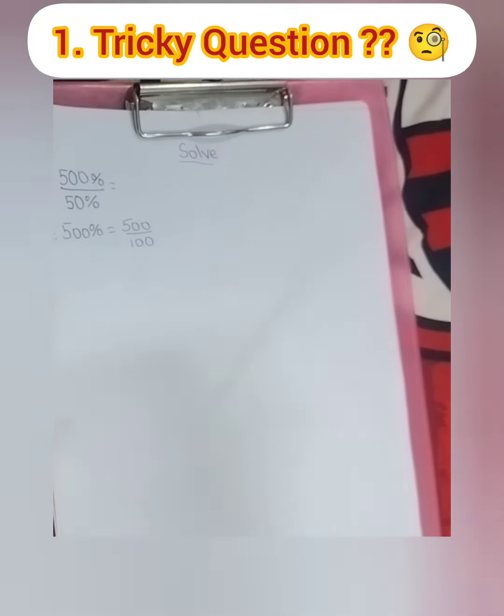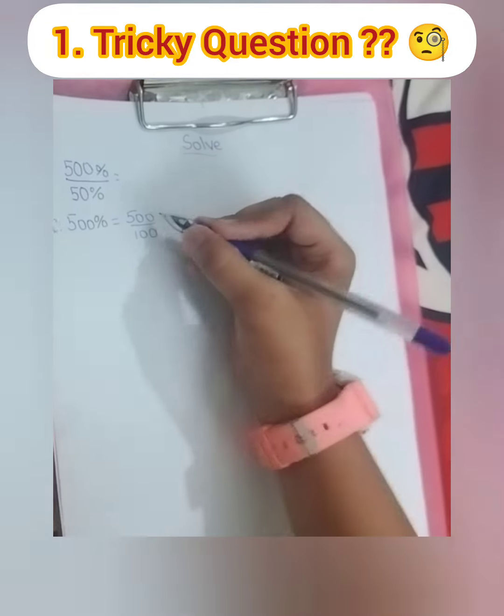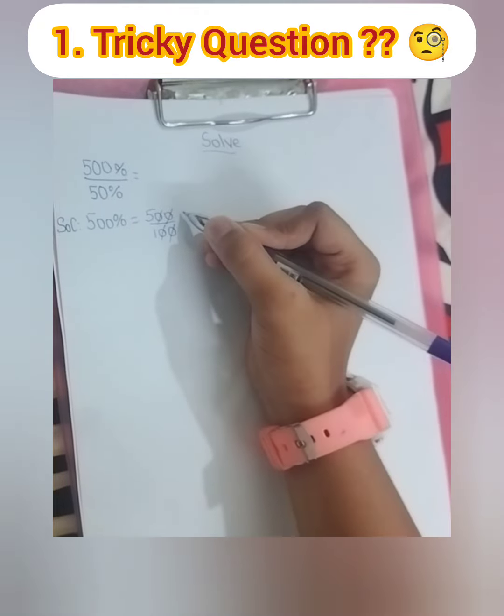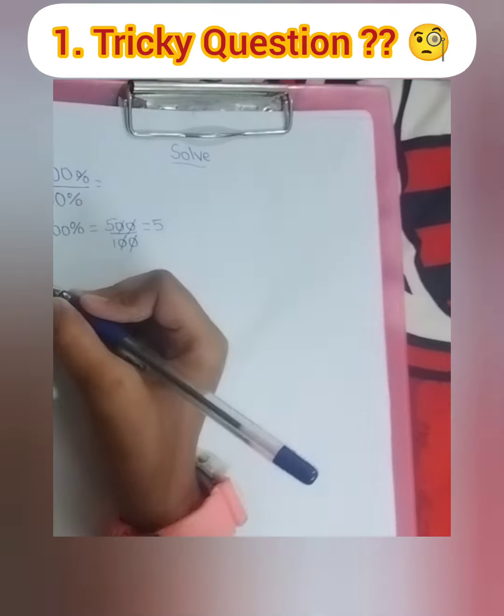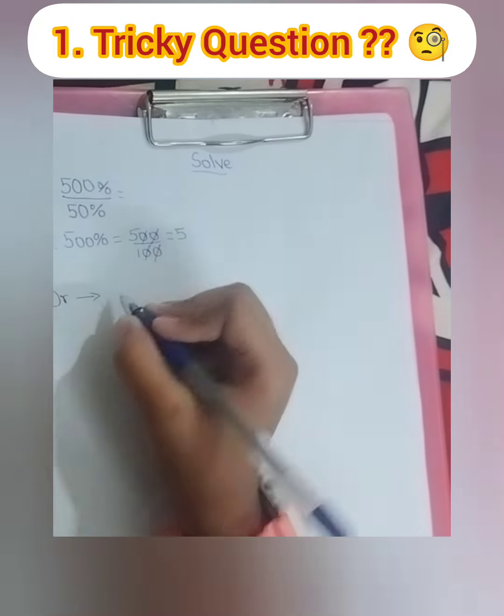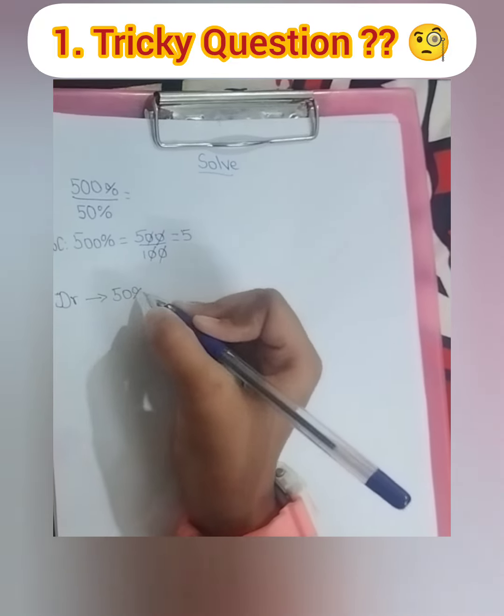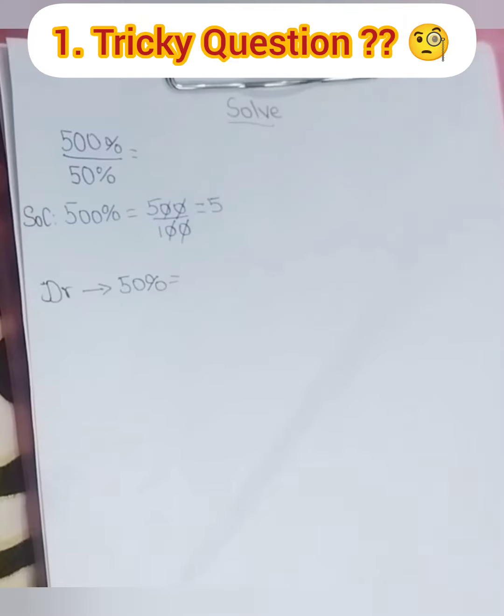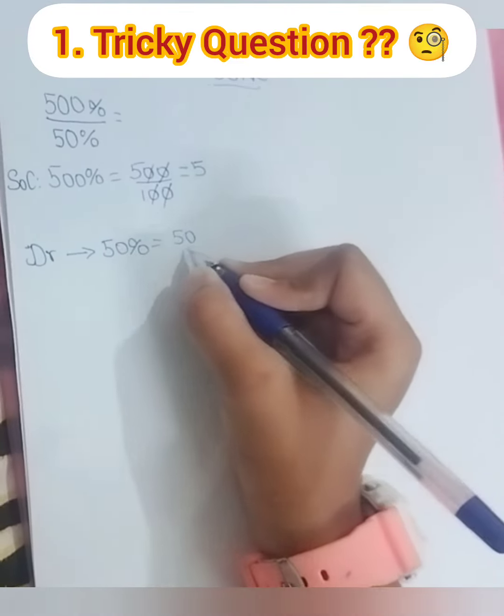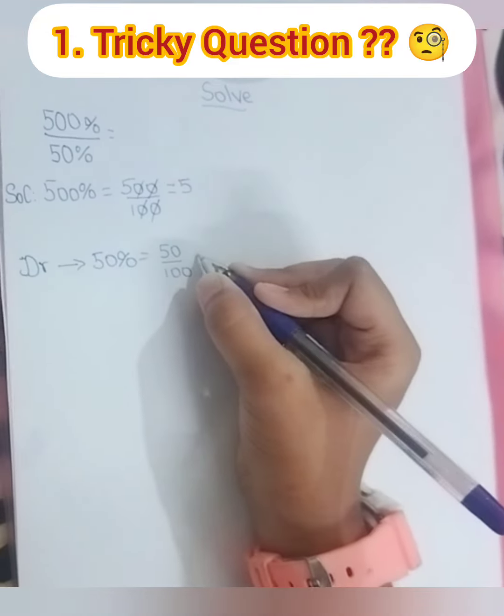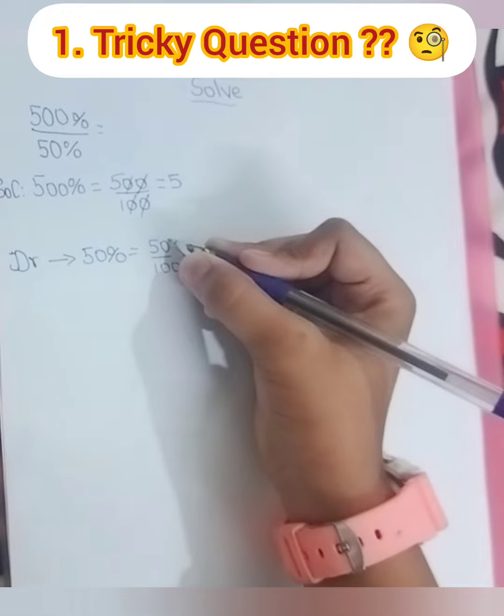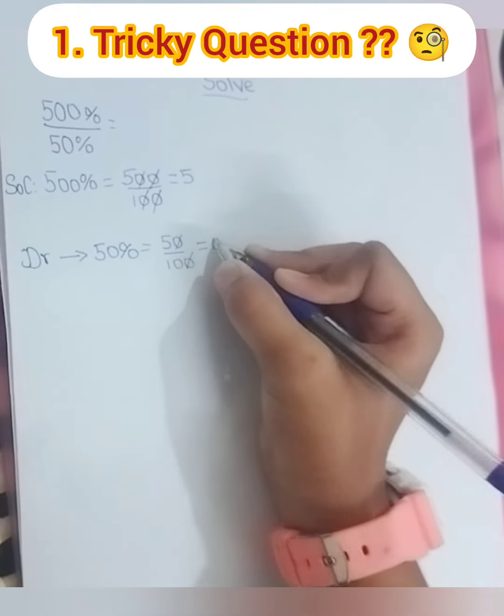Now let's cancel the zeros, which becomes 5. Let's see the denominator. The denominator is 50%, so it becomes 50 by 100. Then we have to do the cancellation with the zeros, which becomes 5 by 1 point, or 0.5.